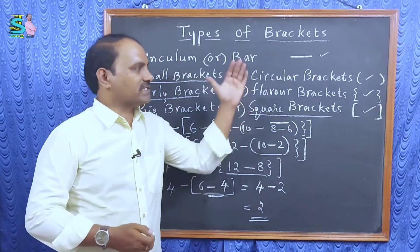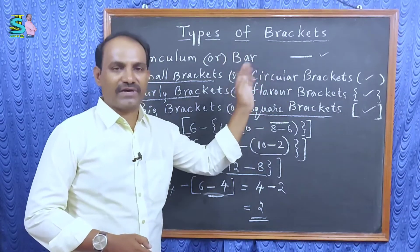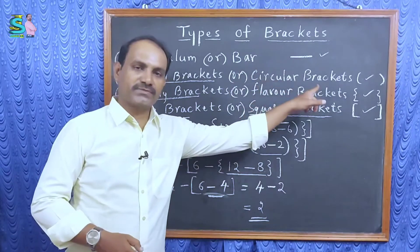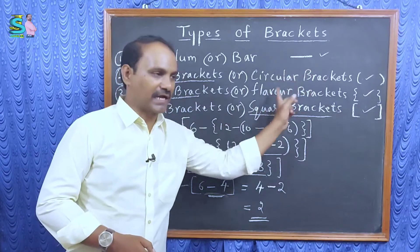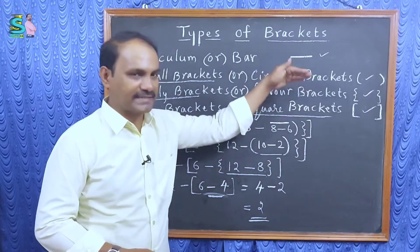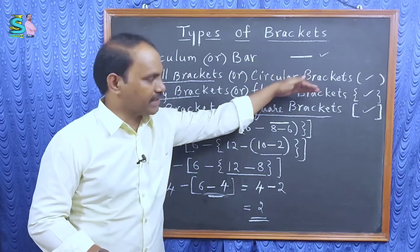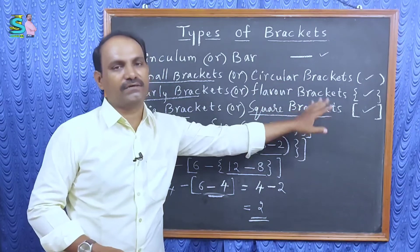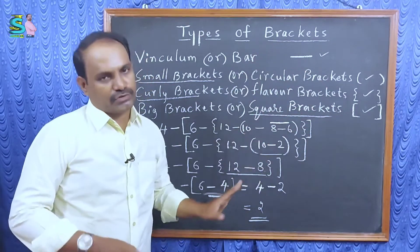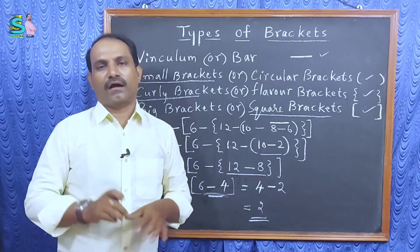This one is the process of brackets. How to calculate which one? First, vinculum. Next, small brackets. After that, curly brackets. After that, square brackets. This is the ascending order. These are the small bracket. And then, little bigger and little bigger and last, biggest brackets. This method you should follow to calculate the answer.